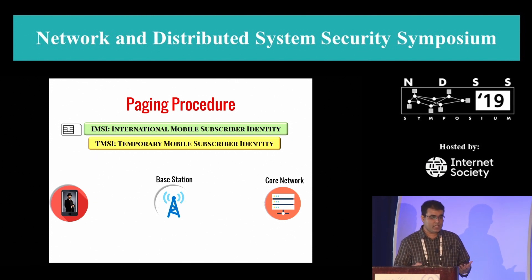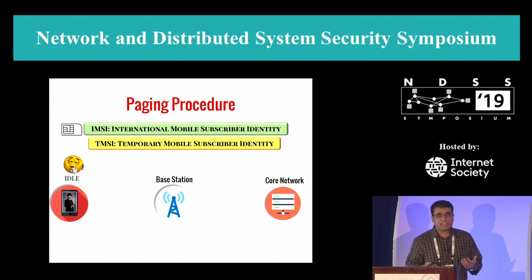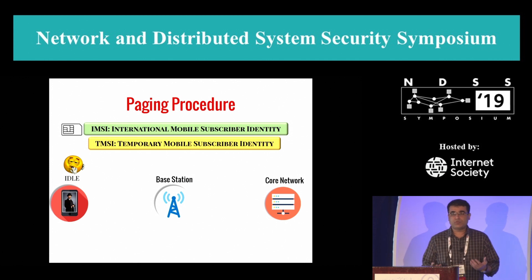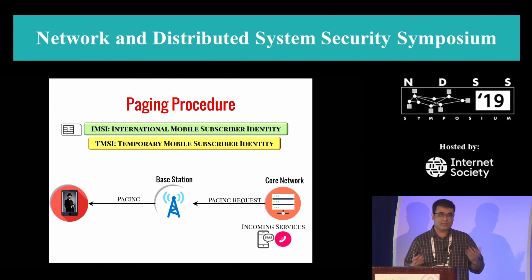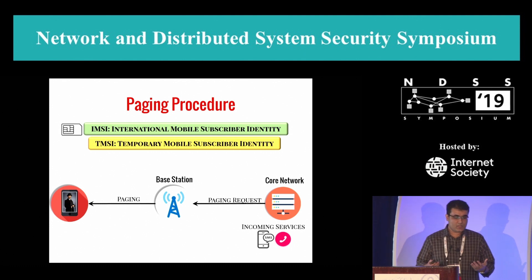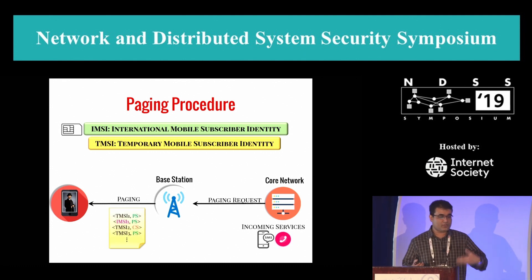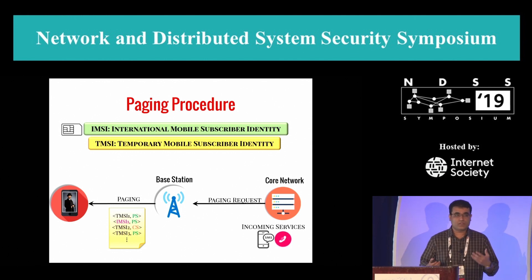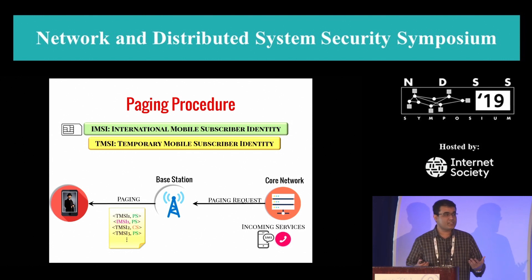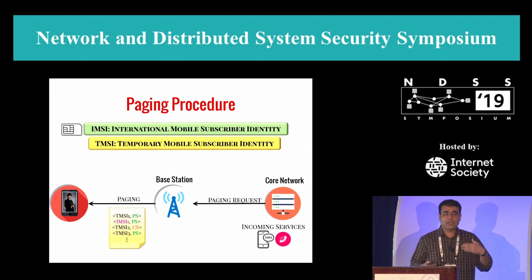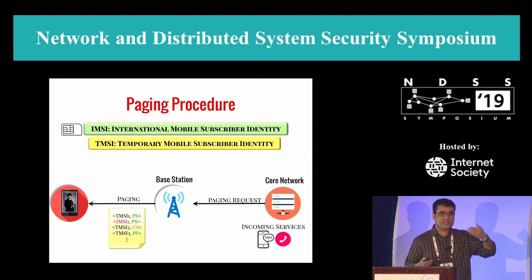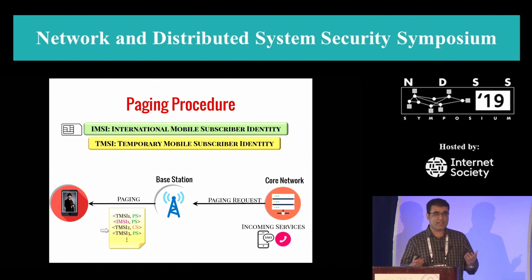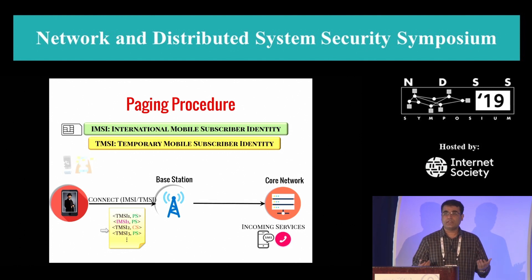If there is no cellular activity, the device goes to the idle state. The question is: if there are any incoming services during idle time, how will the core network notify the device? The core network requests the base station to send a paging message, which is a broadcast message with no authentication, and the message is in plain text. The paging message contains a list of up to 16 paging records, where each record is a tuple consisting of the device's IMSI or TMSI, and an indication of PS (packet switch, meaning 4G) or CS (circuit switch, meaning 2G or 3G services). The device scans the list sequentially and when it finds a matching record, it responds back to the network and gets connected.